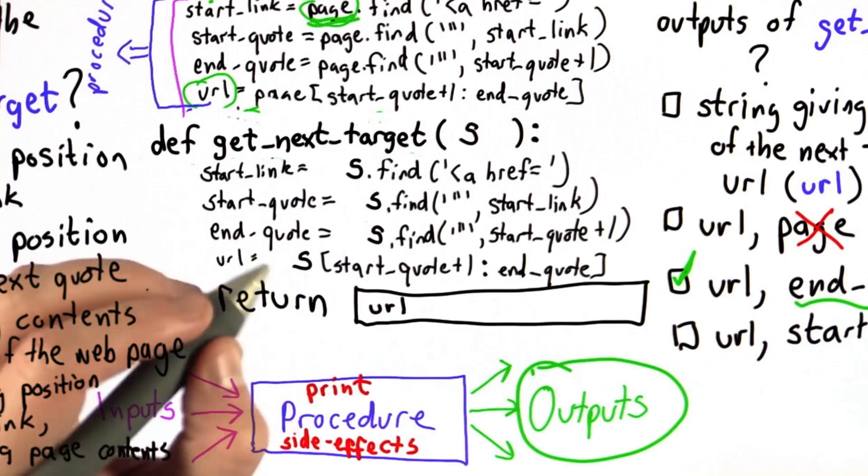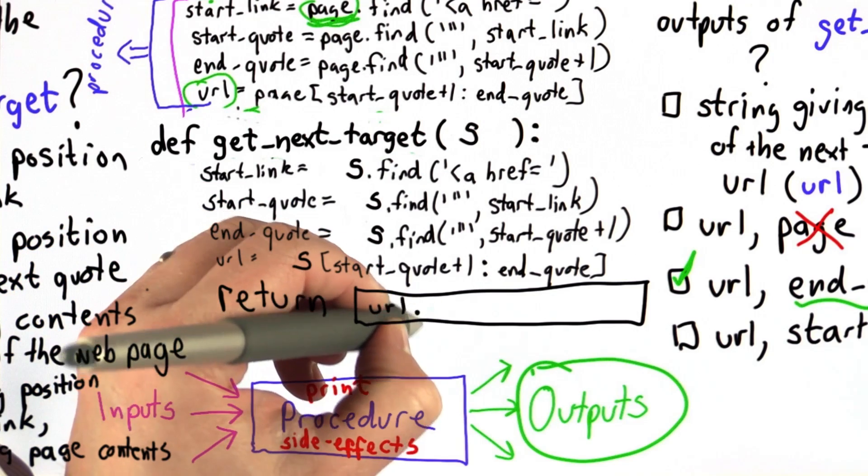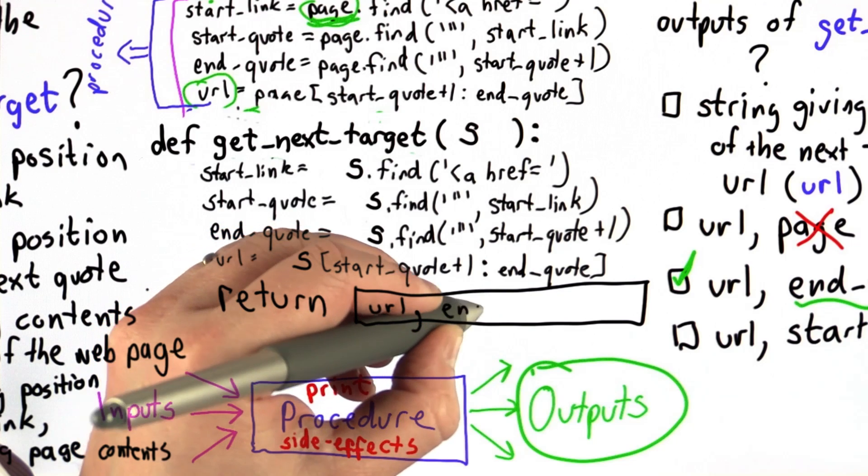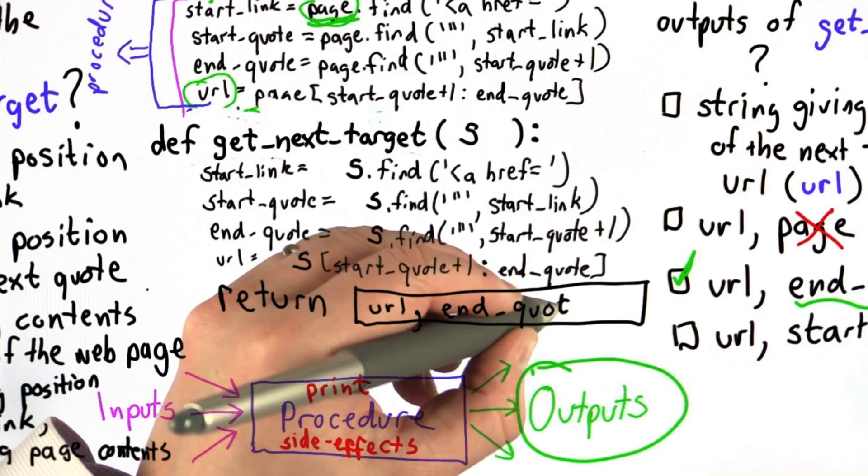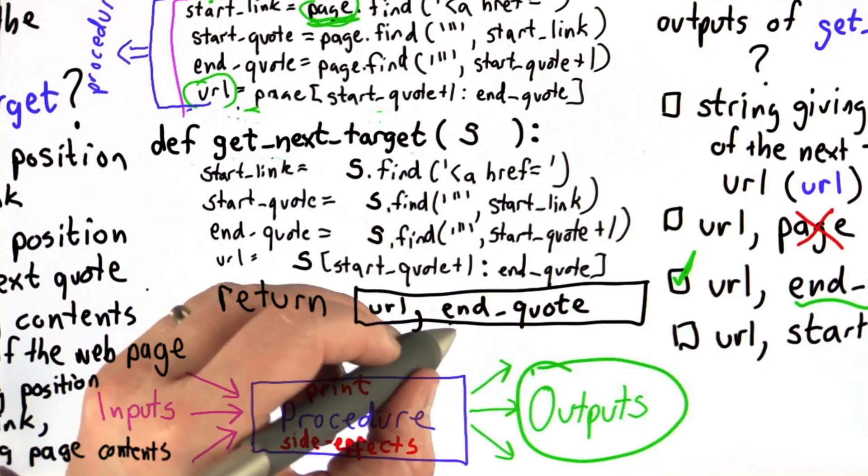We're going to have returning url, followed by a comma, followed by end quote. And so that means that the two outputs from our procedure are the two values of url and the value of end quote.